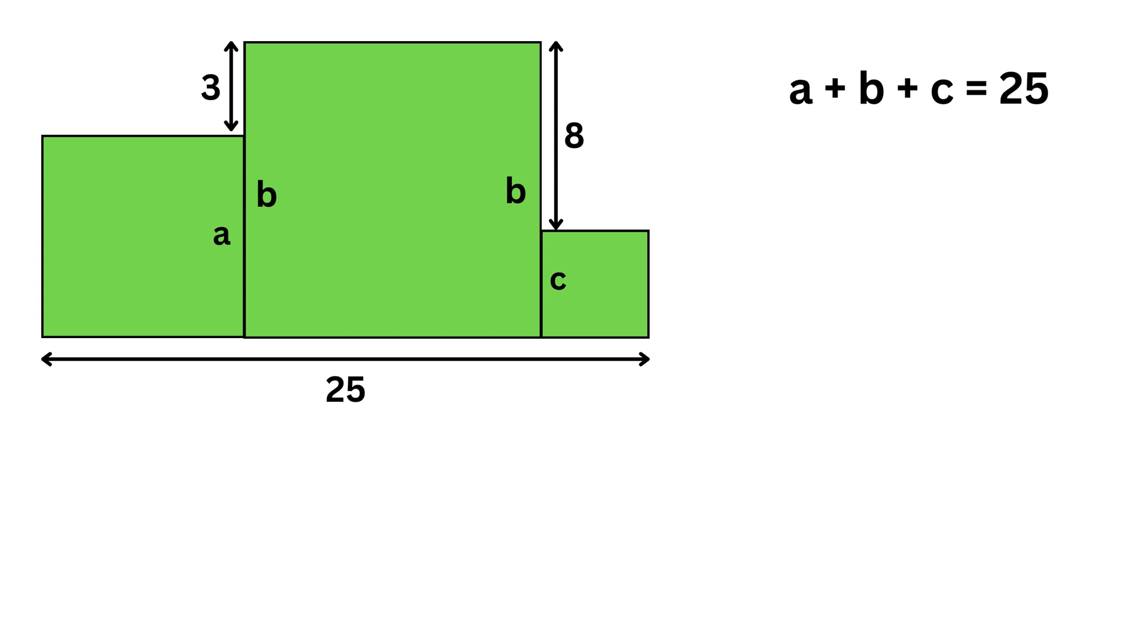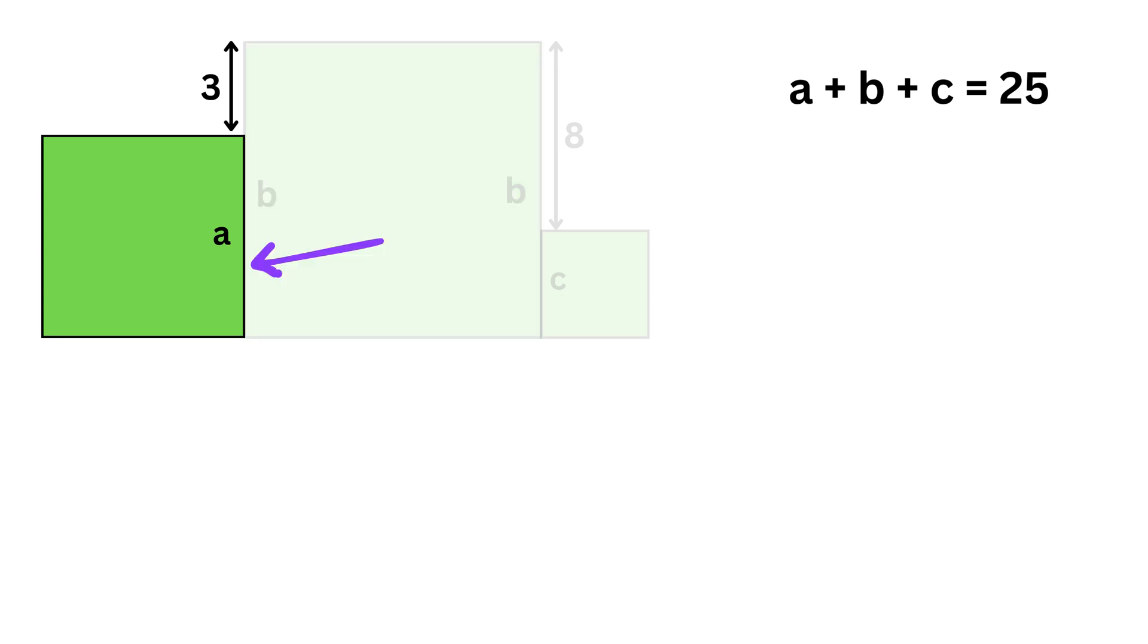Now step two is understanding the vertical measurements for finding the other two equations. For that, consider first the medium and the large square. This piece has side length A, and this is equal to 3, right? So this entire length will be equal to A plus 3.